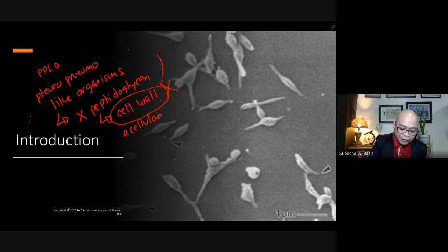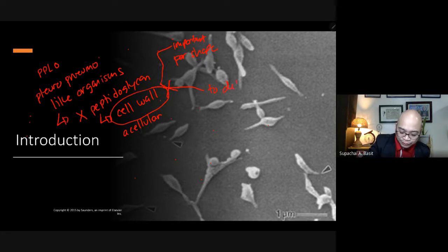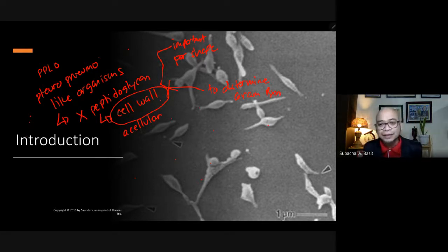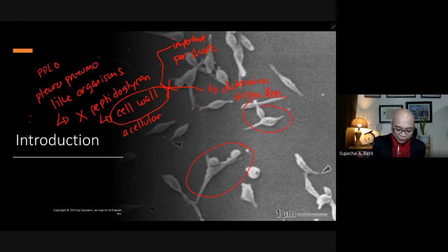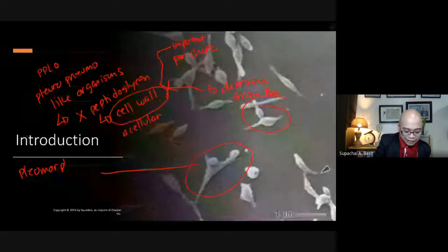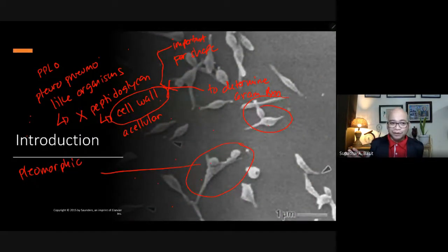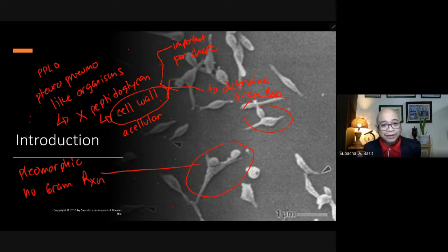Cell wall is important for shape, and also important to determine the gram reaction of a certain bacterium. Since this particular bacteria do not have a cell wall, they do not have a certain shape — there is no definite shape. Therefore, this bacteria may be considered as pleomorphic, and they do not have a gram reaction. We cannot classify them as gram-positive or gram-negative, primarily because they do not have peptidoglycan.